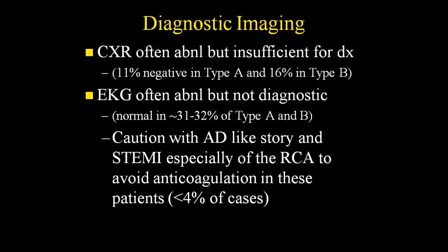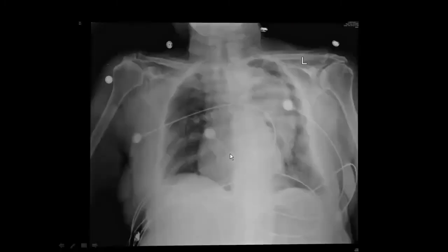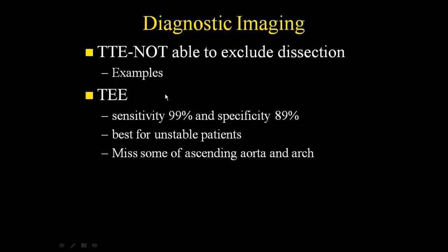Here's an example of a wide mediastinum on chest X-ray — a classic sign, but it's only seen in about 63% of people with Type A dissection. Another example is fairly obvious, though if someone's arm is in the way it can be obscured. Transthoracic echo is not very useful for this diagnosis; sometimes you can see a dissection flap, but it's limited.